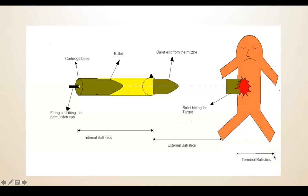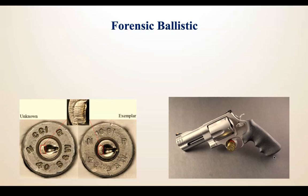Terminal ballistics is also known as wound ballistics if the target is a living organism. If the target is non-living, it is simply referred to as terminal ballistics.